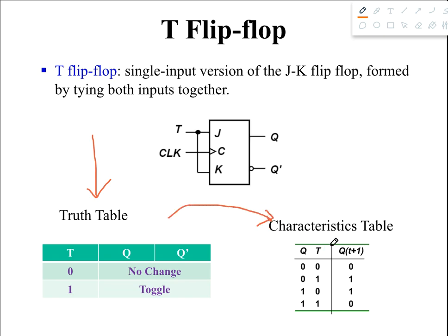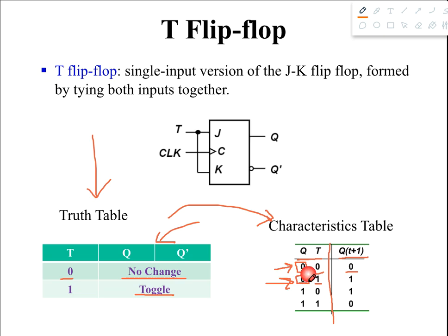Now to derive the characteristic table from the truth table: the characteristic table always has two parts. On the left we write the present state and the flip-flop input T — two variables, four combinations. On the right we write the next state Q(T+1). For the first row, T equals 0 means no change, so present state 0 gives next state 0. For the second row, T equals 1 means toggle, so present state 0 gives next state 1. For the third row, T equals 0 means no change, so present state 1 gives next state 1.